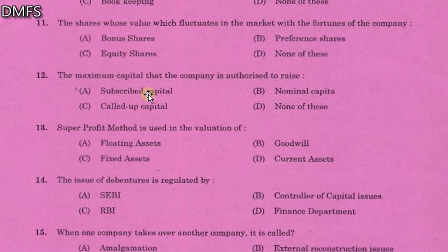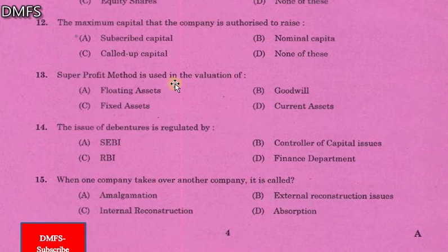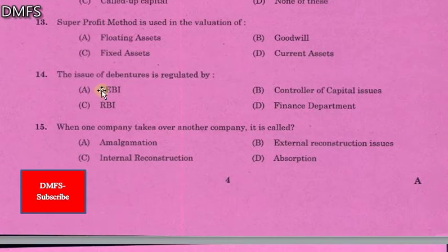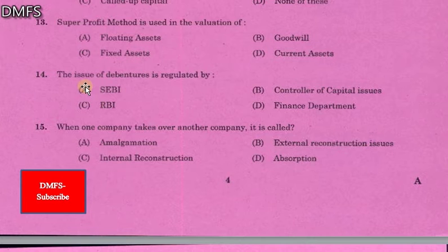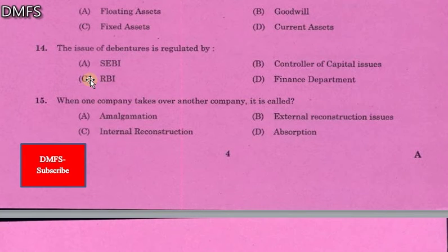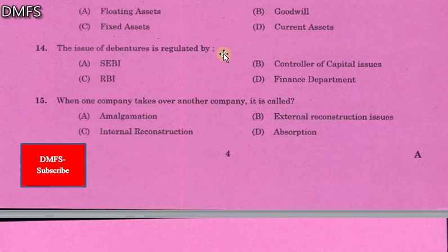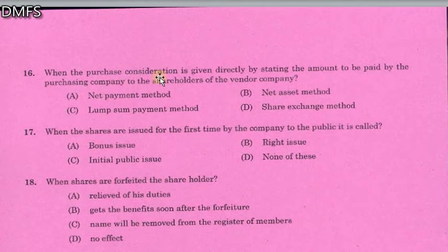Question 13: the super profit method is used in the valuation of goodwill — option B is the answer. The issue of debentures is regulated separately — we have a separate video on capital. When one company takes over another company, option D is absorption. When purchase consideration is given directly by stating the amount to be paid by the purchasing company to the shareholders of the vendor company, this is the lump sum payment method — the total purchase consideration.